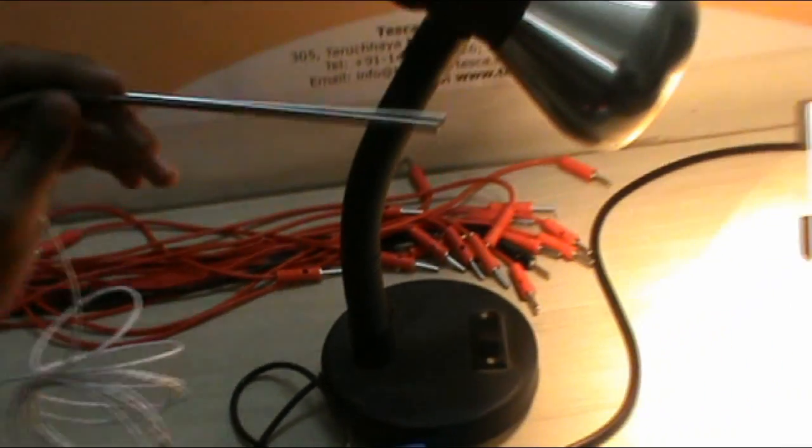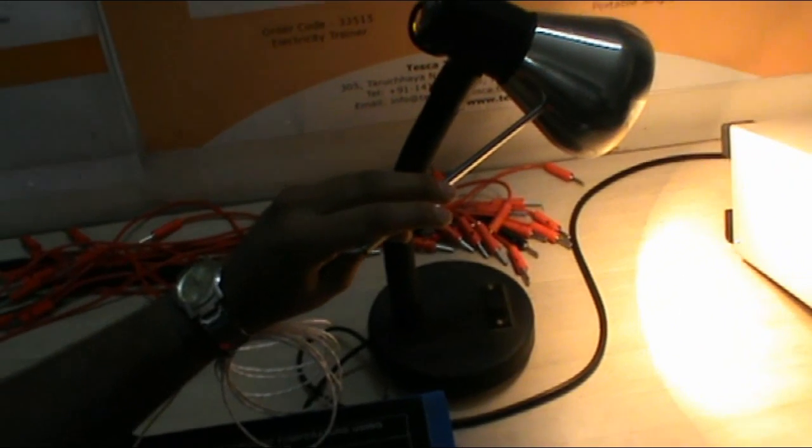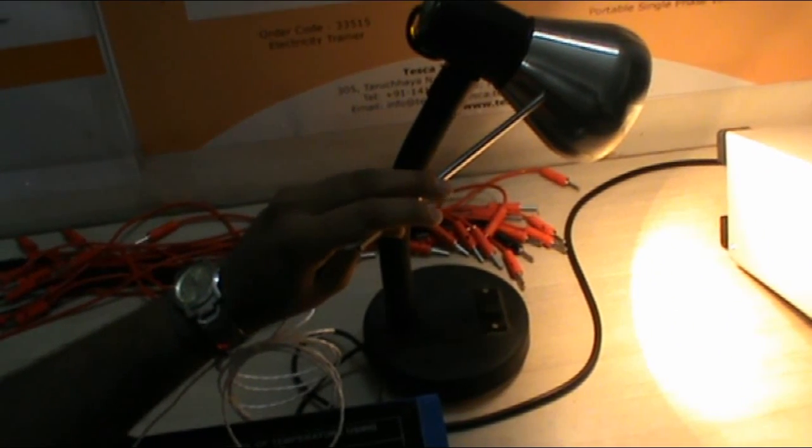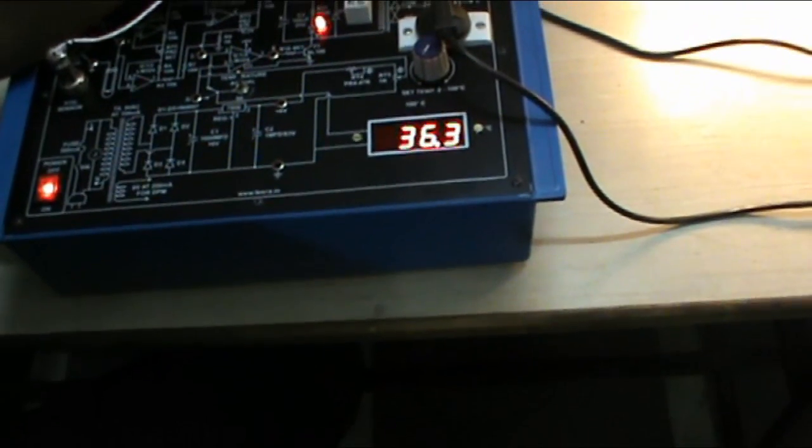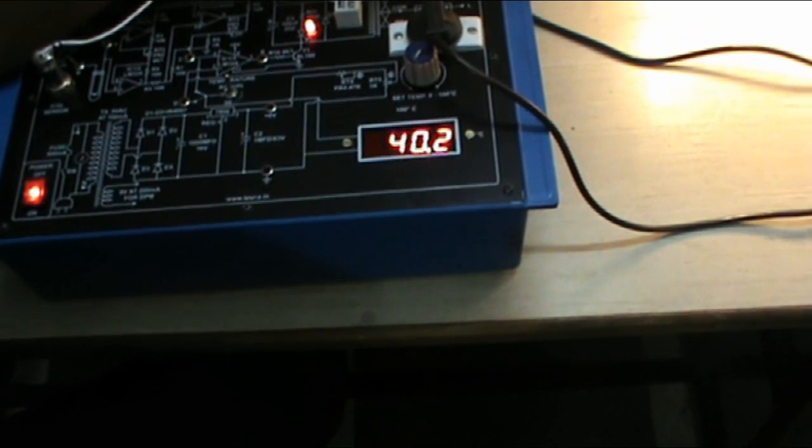Now when we touch this transducer to the base of the lamp, the temperature will increase. As you can see in the LCD, and as the temperature crosses the 55 degrees Celsius, the lamp will switch off automatically.